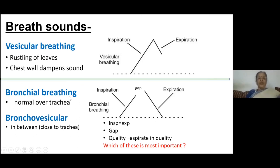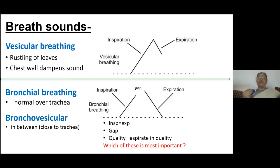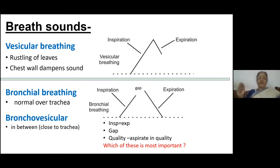All of you know there is an entity called bronchial breathing. What we hear over the trachea — the typical way of experiencing bronchial breathing — is to put the stethoscope on the trachea, ask the patient to breathe, and you hear a sound. That is bronchial breathing. It's really very different from vesicular breathing.